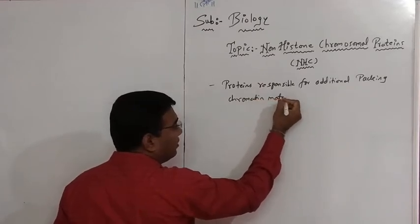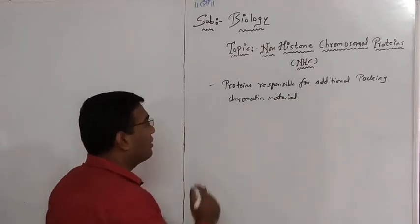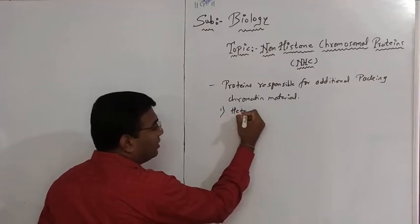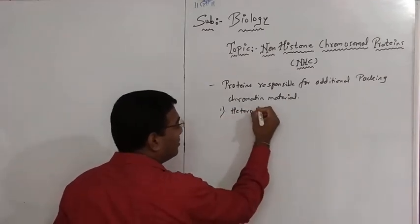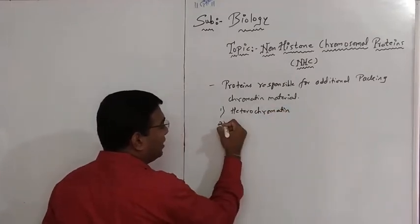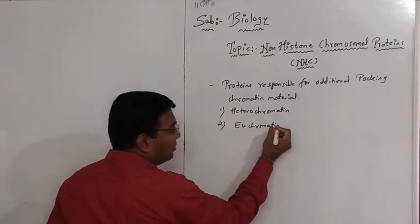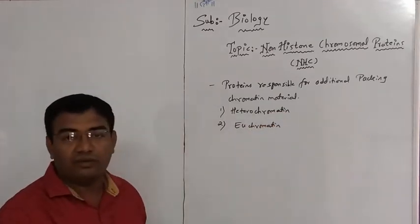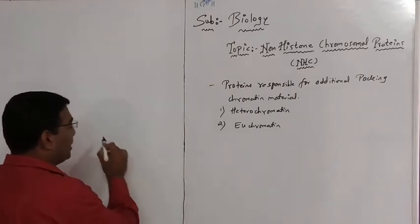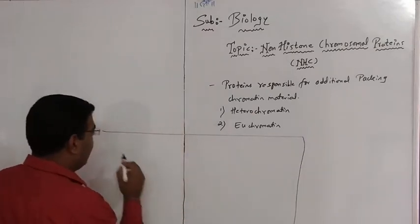Non-histone chromosomal proteins, NHC, are further classified into two types: one is heterochromatin and second is euchromatin. I will explain the difference between heterochromatin and euchromatin by separating them into two different charts.